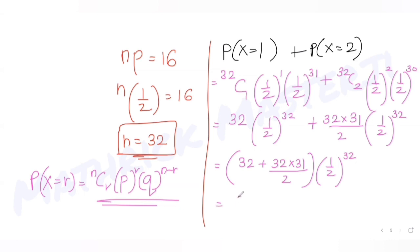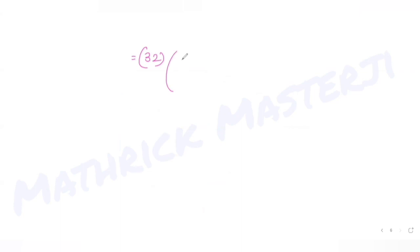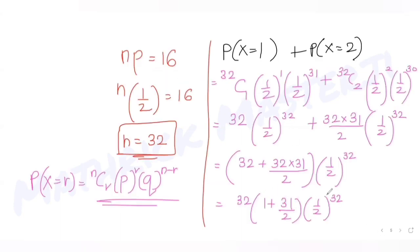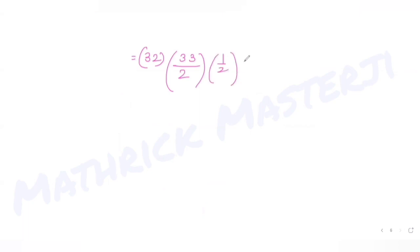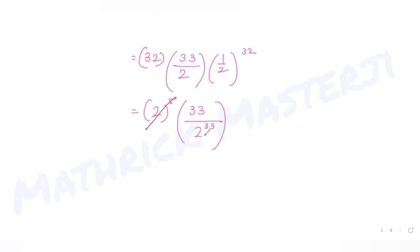Combining: 32·(1/2)^32 + 496·(1/2)^32 = (32 + 496)·(1/2)^32. Taking 32 common: 32·(1 + 31/2)·(1/2)^32 = 32·(33/2)·(1/2)^32 = 33·(1/2)^31·... Simplifying: 2^5 · 33 / 2^33 = 33 / 2^28.